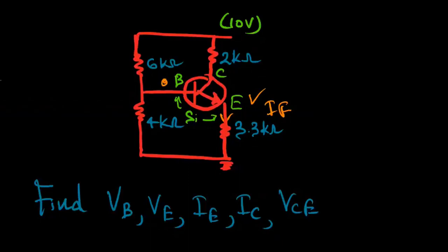In this question they are asking us to find the potential at point B, point E, IE current, IC current, and VCE potential difference. To find VB, we'll start with this point and apply the potential divider method.